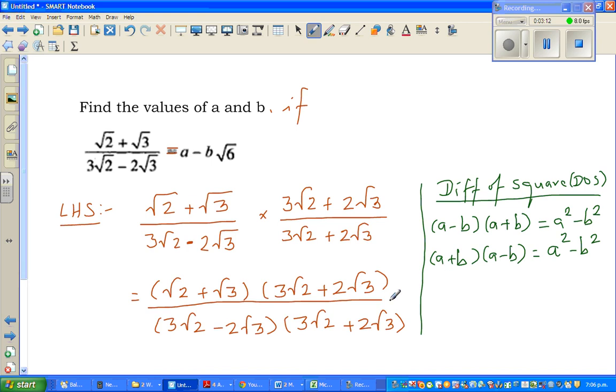So if you compare A with 3 root 2 and B with 2 root 3, you can use this formula. Compare A with 3 root 2 and B with 2 root 3. I hope if you expand this, I'm not going to do that, you can do that yourself. If you expand this, you'll get this.